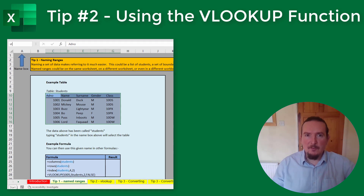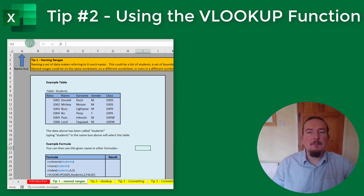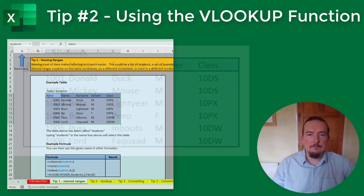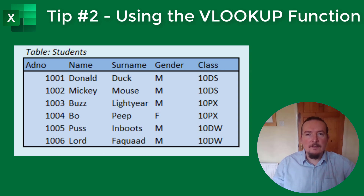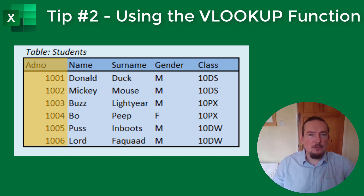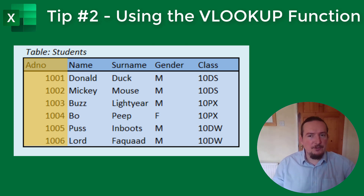In the last video we named this table of information as STUDENTS, so now if we type STUDENTS into the name box up here, you can see that Excel's focus jumps onto this table. Notice that the first column of the table is called ADNO and contains a number. ADNO is short for admission number, and my school uses this number to uniquely identify students. Students are assigned this number when they first arrive at school and will hang on to it until they leave.